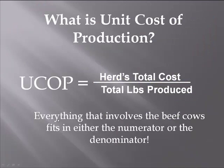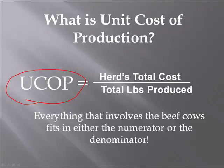So what is unit cost of production, and why should you be interested in it? We'll use the acronym UCOP. Everything that goes on in the cow-calf business can be described in this ratio. Anything having to do with the cost side — buying a new bull, spending money on a vaccination program — goes in the top of this ratio. Anything on the production side — weaning weight, pounds lost if cows aren't bred well — goes in the bottom. So anything you do in this business affects this ratio, which is why it's such an important number to know.